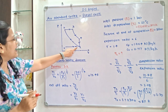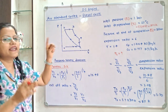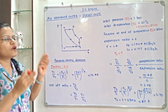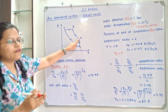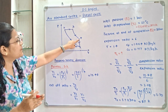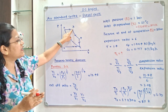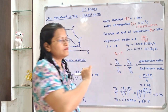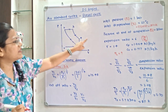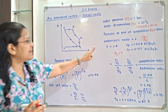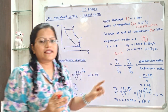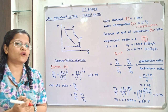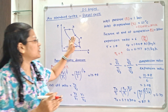For the expansion ratio, we know that process 1 to 2 is compression, 2 to 3 is heat addition, 3 to 4 is the expansion process, and 4 to 1 is the heat rejection process. The expansion ratio is V4 by V3 because V4 is larger than V3. From the diagram, V4 by V3 is equal to 6. Gamma is equal to 1.4, Cp is 1.004 kJ/kg·K, and Cv is 0.717 kJ/kg·K.